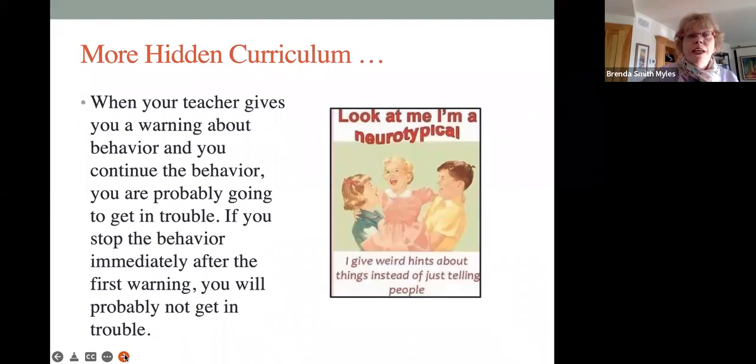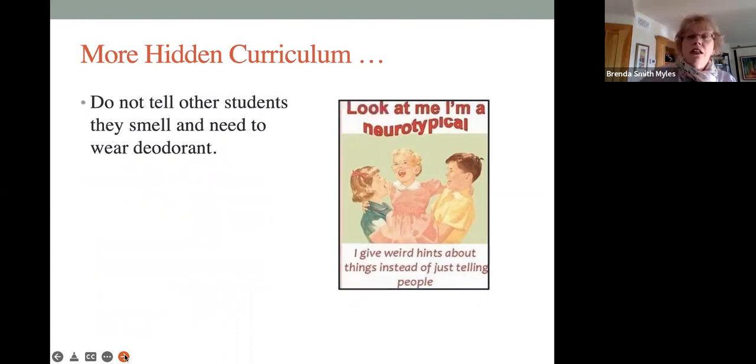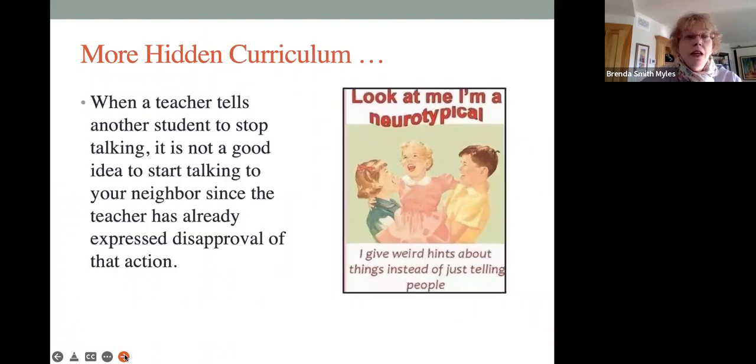When your teacher gives you a warning about behavior and you continue that behavior, you're probably going to get in trouble. If you stop the behavior immediately after the first warning, you probably won't get in trouble. Now, a teacher gives a warning. The student stops the behavior. The teacher forgets about that or puts it to the back of his mind. Well, what happens with our autistic student is they don't know this and they've gotten the warning and they worry about it for the rest of the day. So they need to be, it needs to be explained to them that if they change that behavior, it is no longer an issue. Do not tell other students they smell and need to wear deodorant, which falls under the category of just because it's so doesn't mean you should share it.